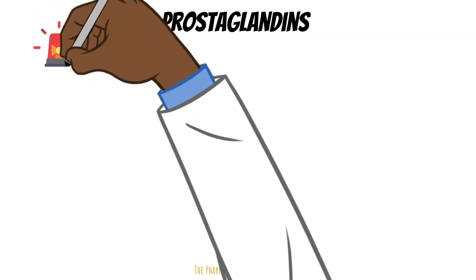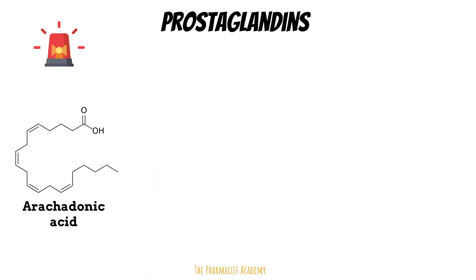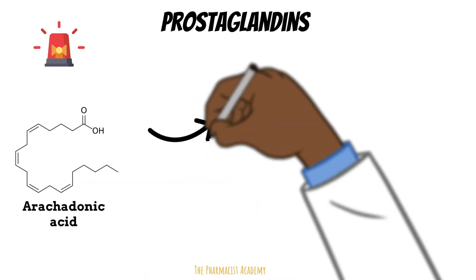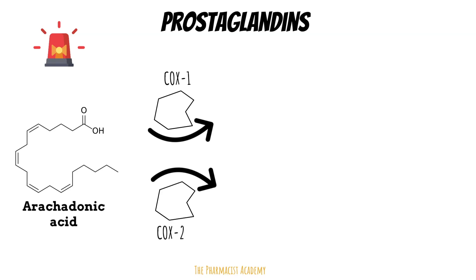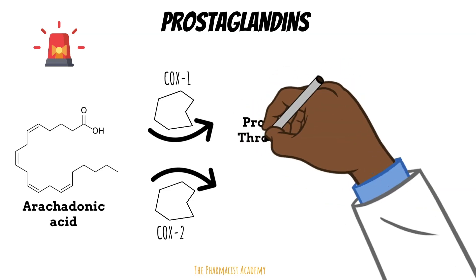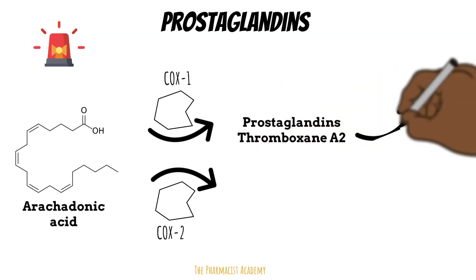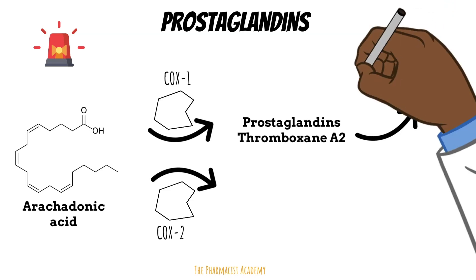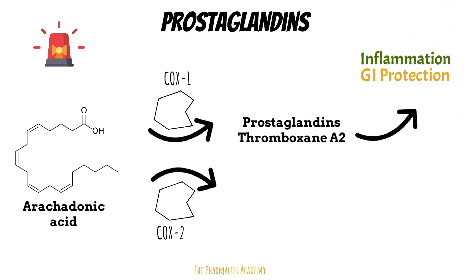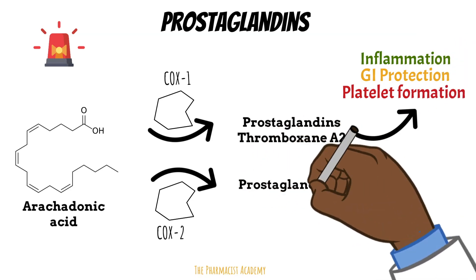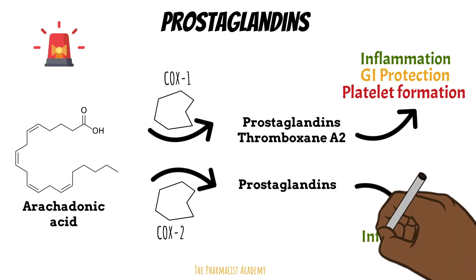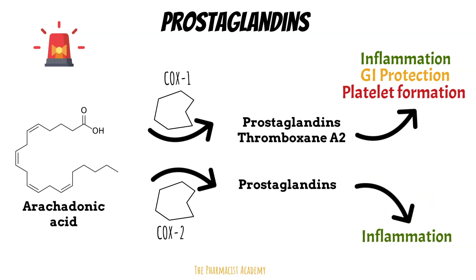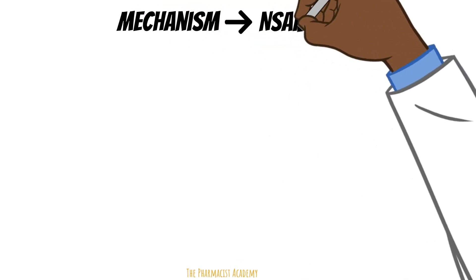Production of prostaglandins begins when the inflammatory response is initiated. In that case, arachidonic acid, which is usually found in the cell membrane, gets converted by cyclooxygenase 1 and cyclooxygenase 2 enzymes. Arachidonic acid converted by COX-1 leads to prostaglandins and thromboxane, responsible for inflammation, protection of the stomach lining, and platelet formation. Arachidonic acid converted by COX-2 leads to prostaglandins mainly responsible for inflammation. With this baseline knowledge, it becomes easier to understand how NSAIDs and Tylenol work.